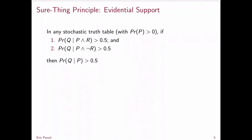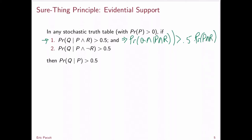So let's start with evidential support. Here's the statement: give me any stochastic truth table. I'd like to show that if (1) the probability of Q given P and R is greater than 0.5, and (2) the probability of Q given P and not-R is greater than 0.5, then the probability of Q given P must be greater than 0.5. Condition (1) implies that the probability of Q and P and R must be greater than 0.5 times the probability of P and R. And condition (2) similarly implies that the probability of Q and P and not-R must be greater than 0.5 times the probability of P and not-R. Both of these follow from the definition of conditional probability.